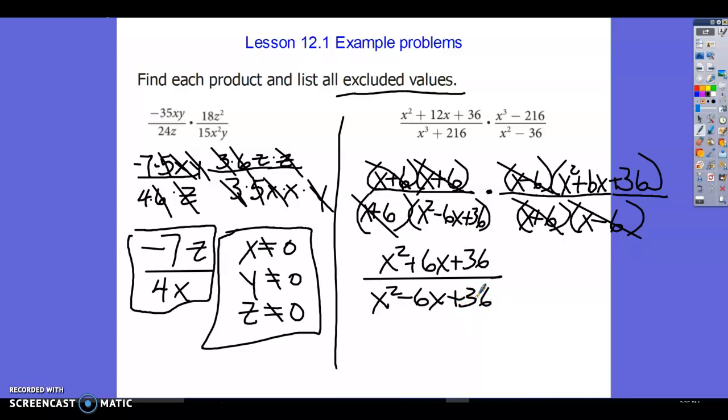And we want to know what our excluded values are. They're going to come from the denominator. So x cannot be 6 or negative 6 because this would be 6 minus 6 is 0. Negative 6 plus 6 is 0. It cancels out.